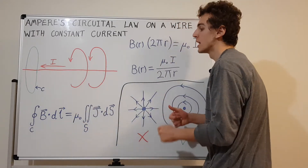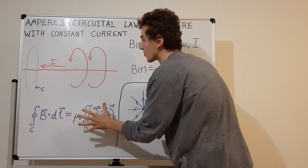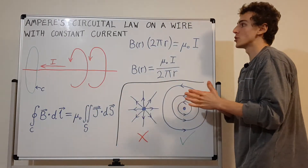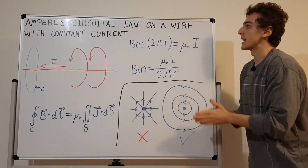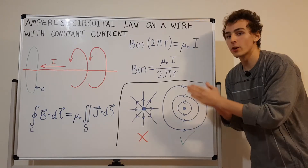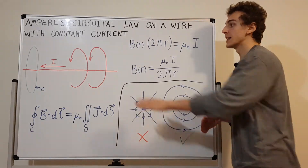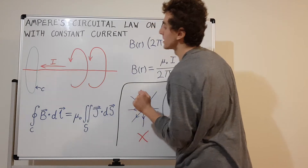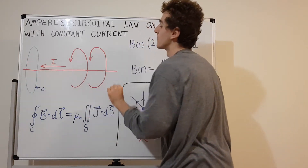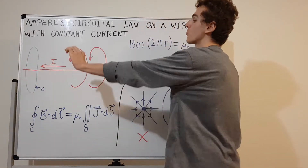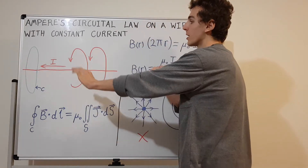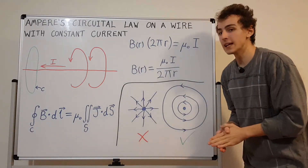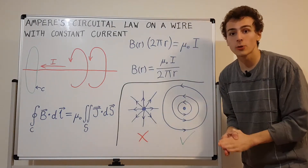We're going to use this law to find the magnetic field around a wire. The system I've chosen for this video is a wire with constant current I going through it. It is a straight wire, and because it's a straight wire, it has a very useful property: cylindrical symmetry.